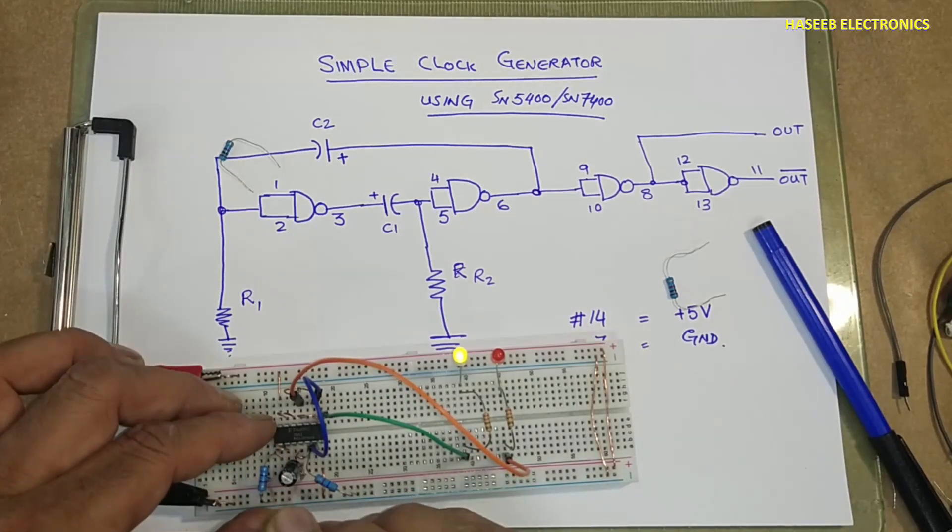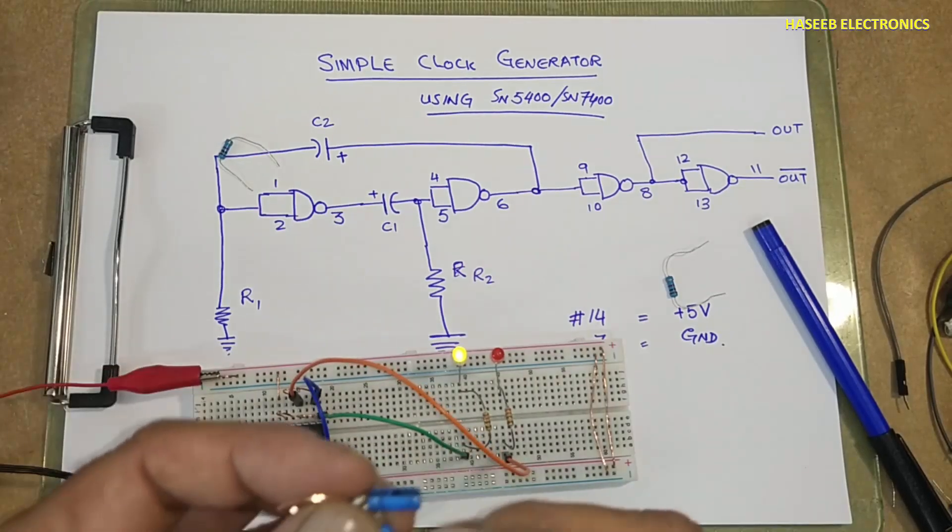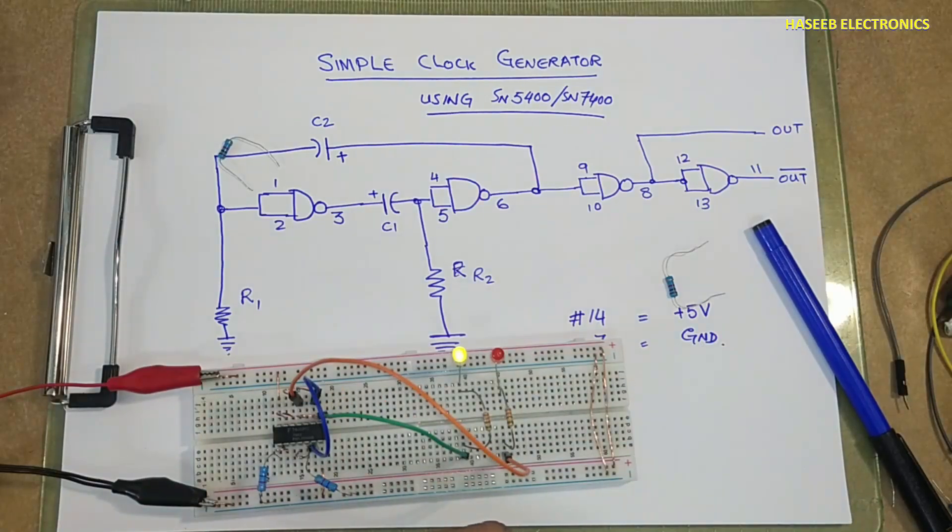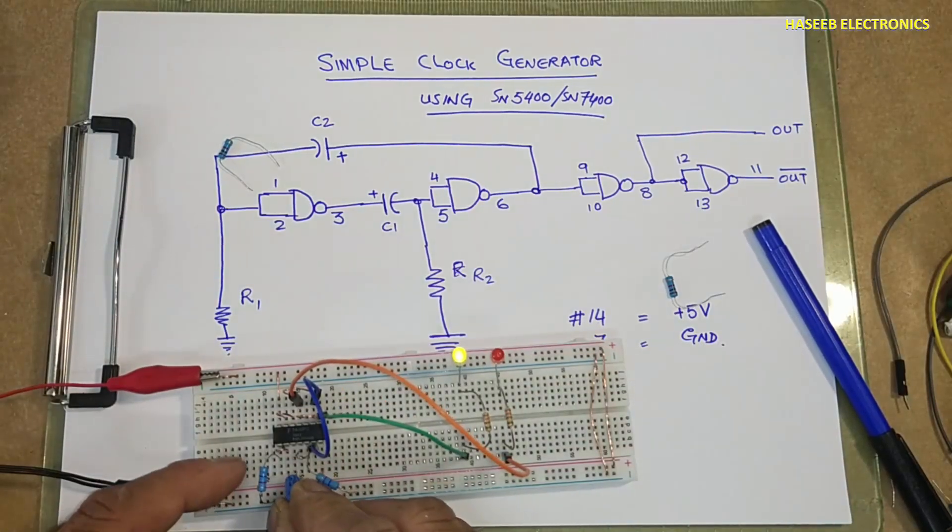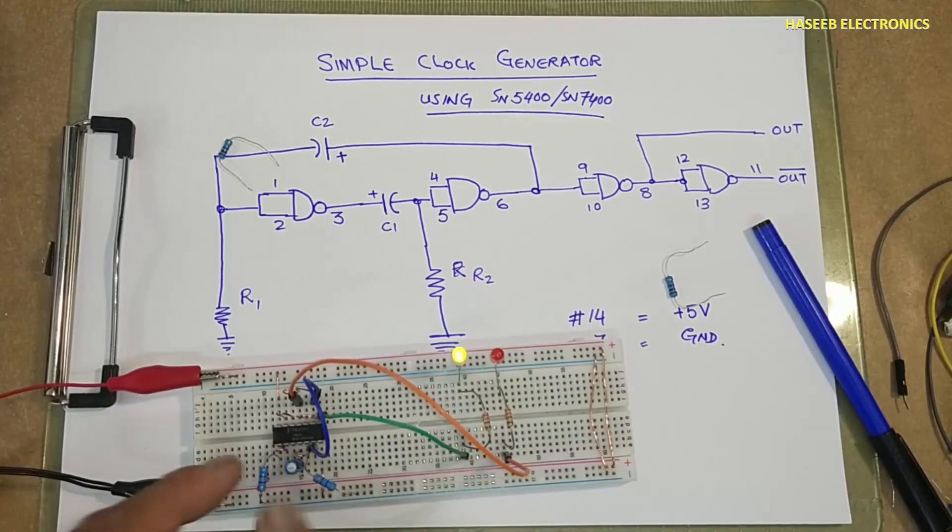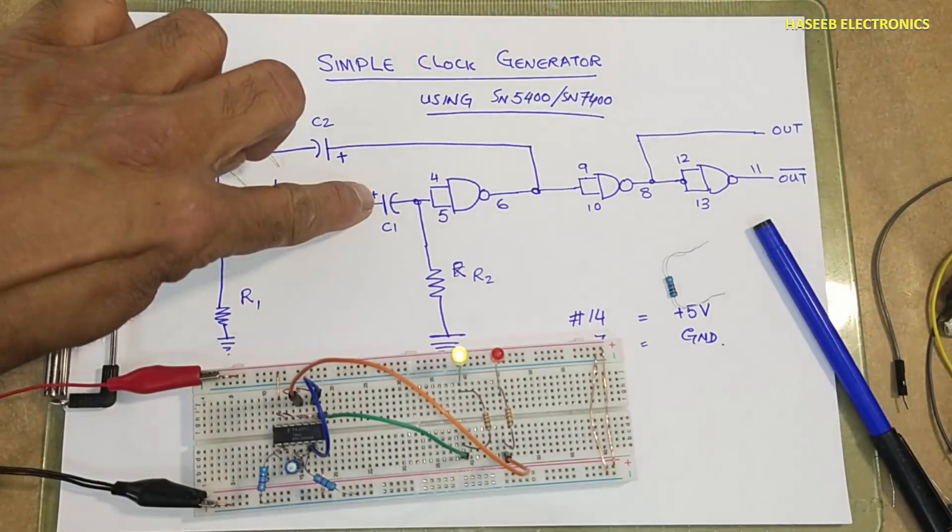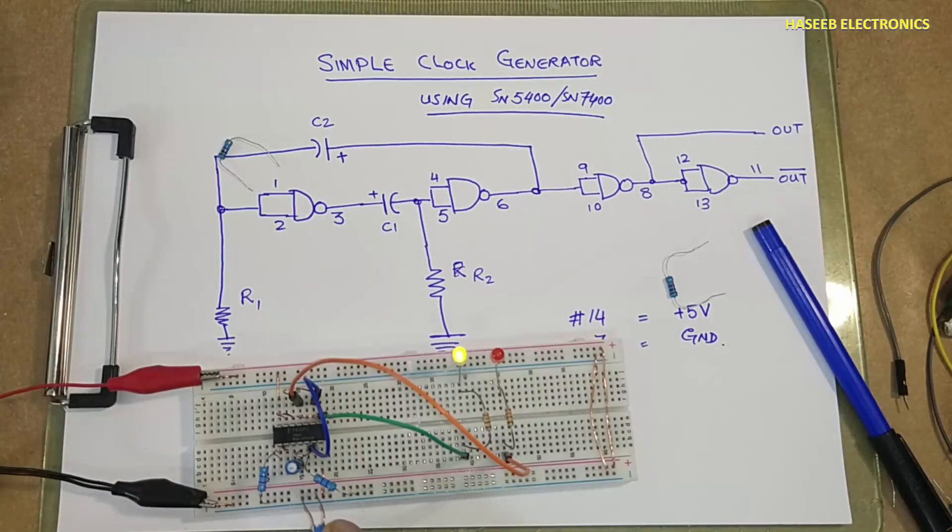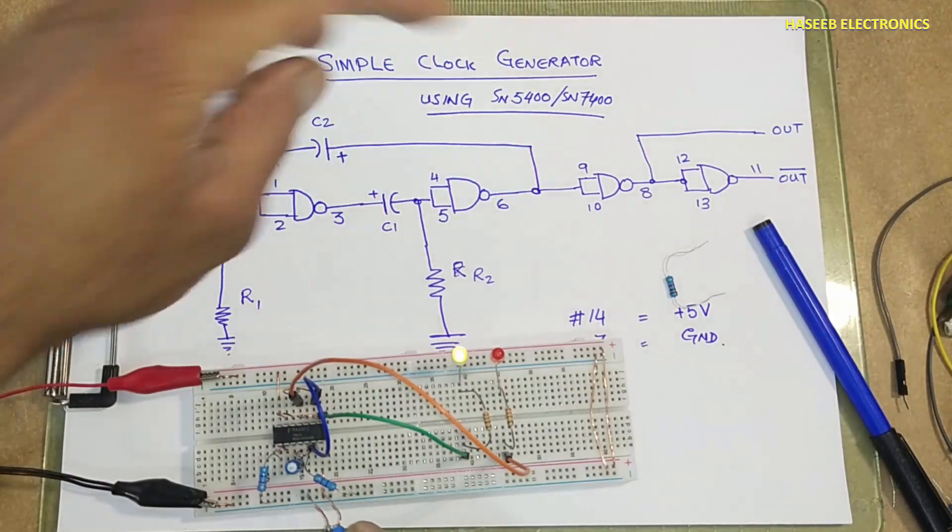And decrease the capacitor size to 33 microfarad 16 volt. Take care for the polarity - positive at pin number 3 side, negative at pin number 4, 5, and 6, positive.